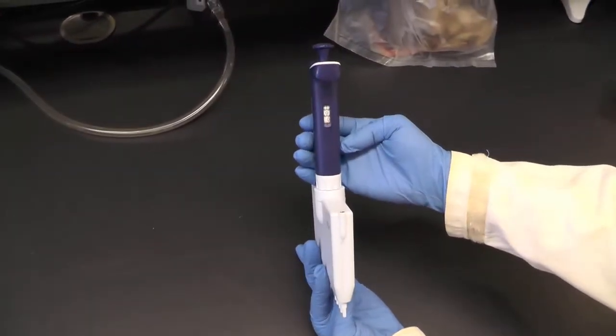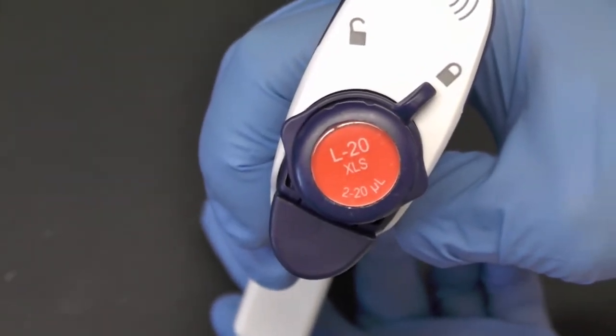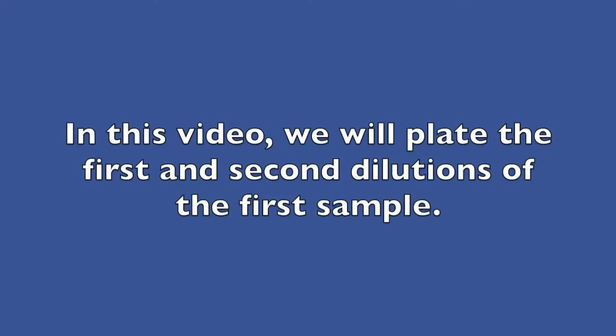Set the volume of a 2 to 20 microliter multi-channel pipette to 10 microliters. You can choose which dilutions you want to plate. Here we made three dilutions for four samples and we will plate the first and second dilutions of the first sample as an example.